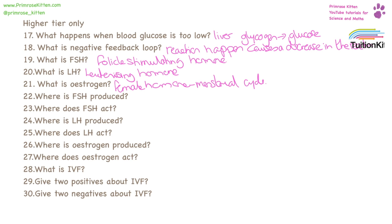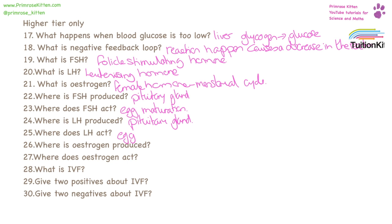FSH is produced in the pituitary gland. It acts on the ovaries and causes an egg to mature. Luteinizing hormone is also produced in the pituitary gland. It acts on the ovaries causing an egg to be released. Oestrogen is produced in the ovaries. It acts on the pituitary gland and causes it to start the production of follicle-stimulating hormone and luteinizing hormone.